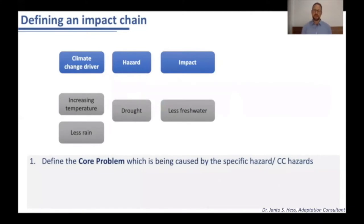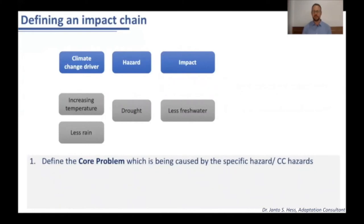Defining an impact chain — I broke it down into four different steps you can use as guidance to develop your project idea further. There are tons of different guidance documents on impact chains and theory of change, and I just want to bring you closer to the basic idea. I broke it down into four simple steps. The first step is to define the core problem caused by a specific climate change hazard.